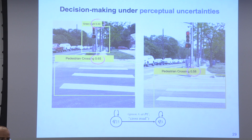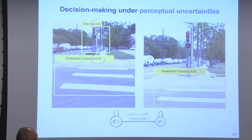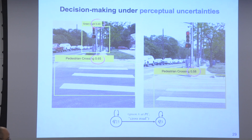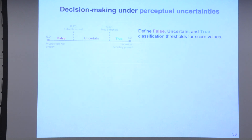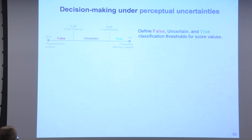Of course, these models will make mistakes. For example, it may think there is a green light in an image when there clearly is not. There are numerical outputs attached to these predictions, but they unfortunately do not correspond to probabilities or confidence values. As a zeroth-order cut toward dealing with underlying uncertainty, instead of acting on outcomes as strictly true or false, in a middle ground we call things uncertain.